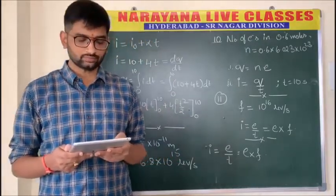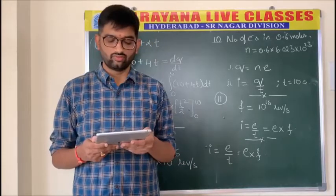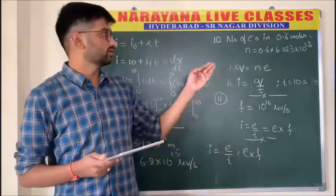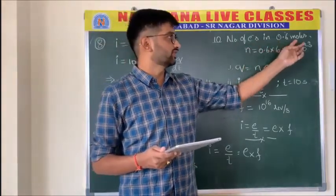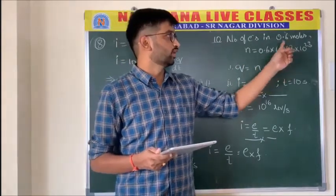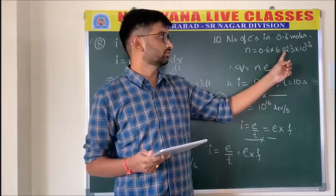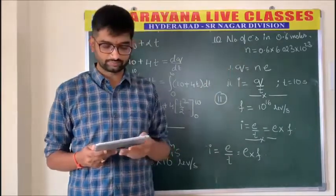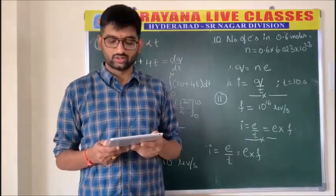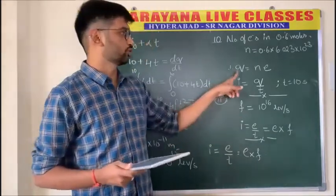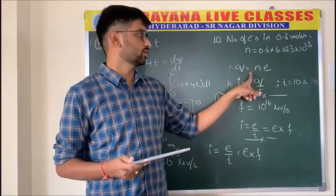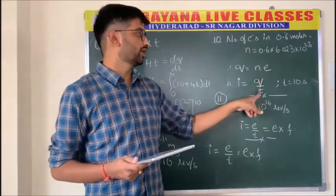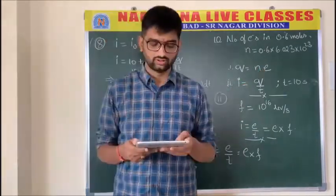Question number ten: if 0.6 moles of electrons flow through a wire in 45 minutes, find the total charge and the magnitude of current. Number of electrons = 0.6 × 6.023×10²³. Total charge q = n×e, and current I = q/t, where t is 45 minutes converted to seconds.